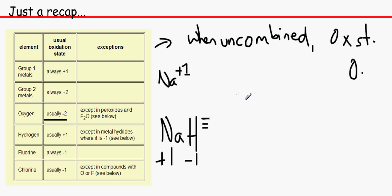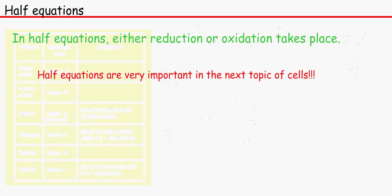Usually, if it was H2SO4, hydrogen would be +1. For fluorine, it's −1. For chlorine, it's −1.